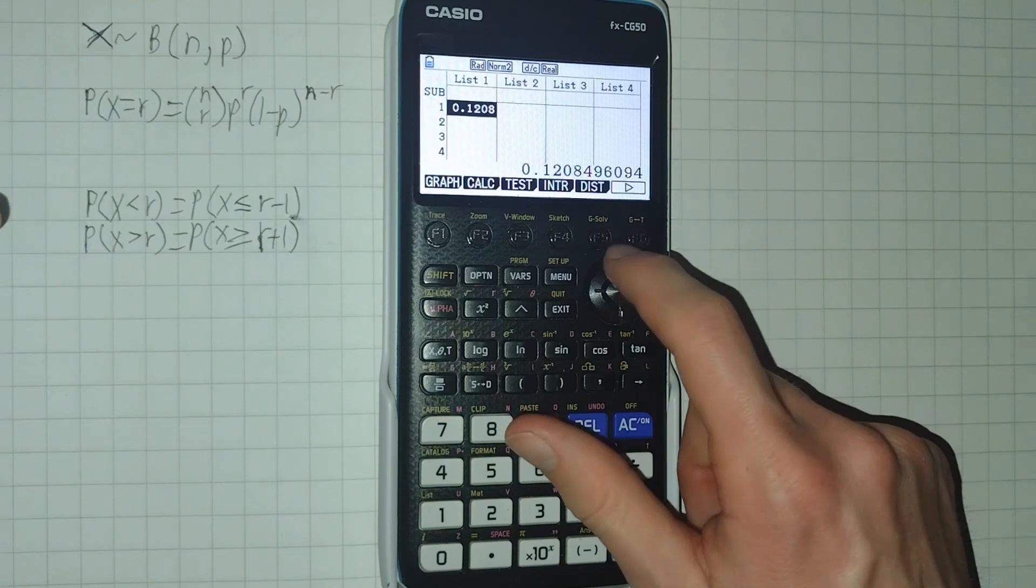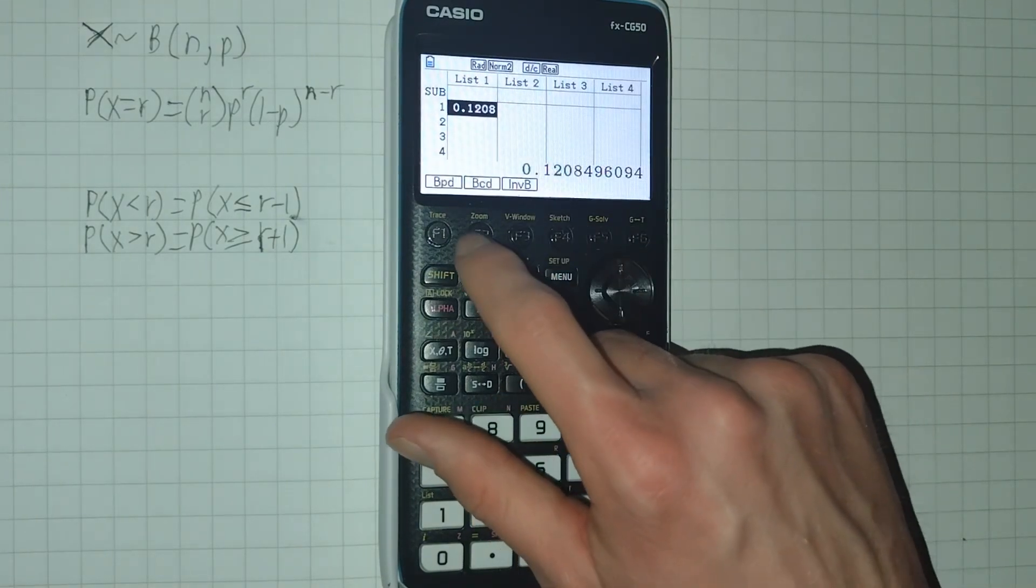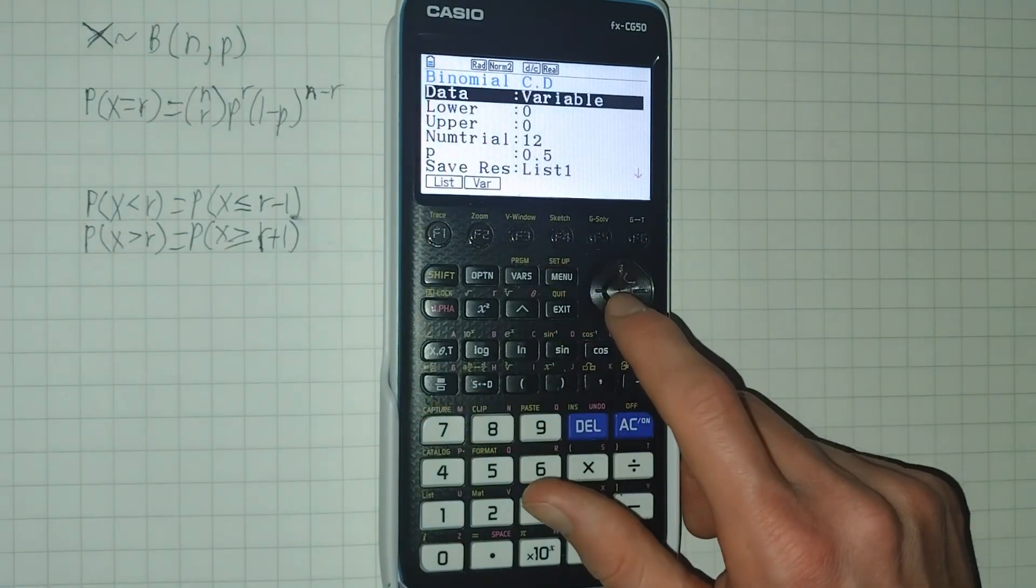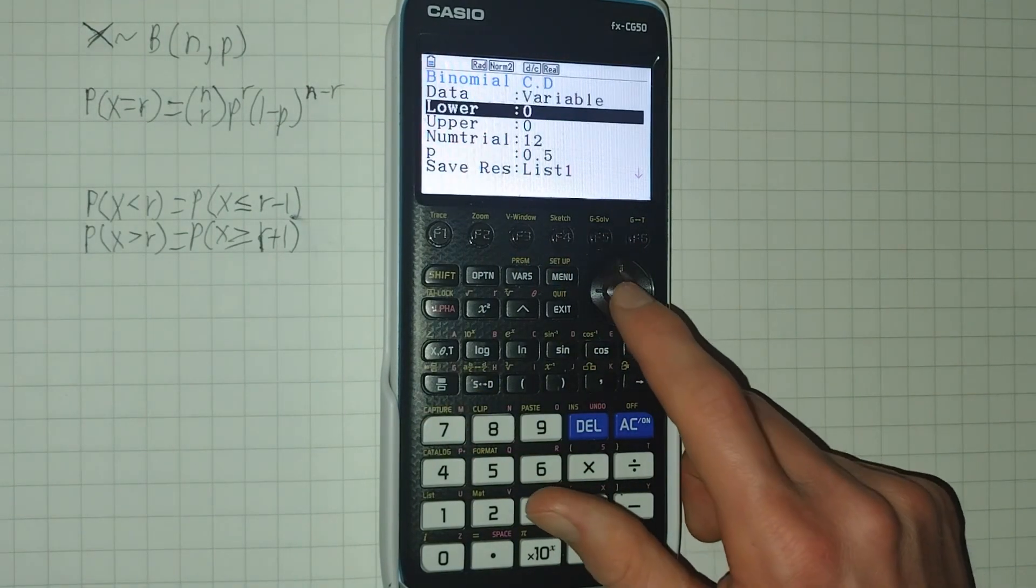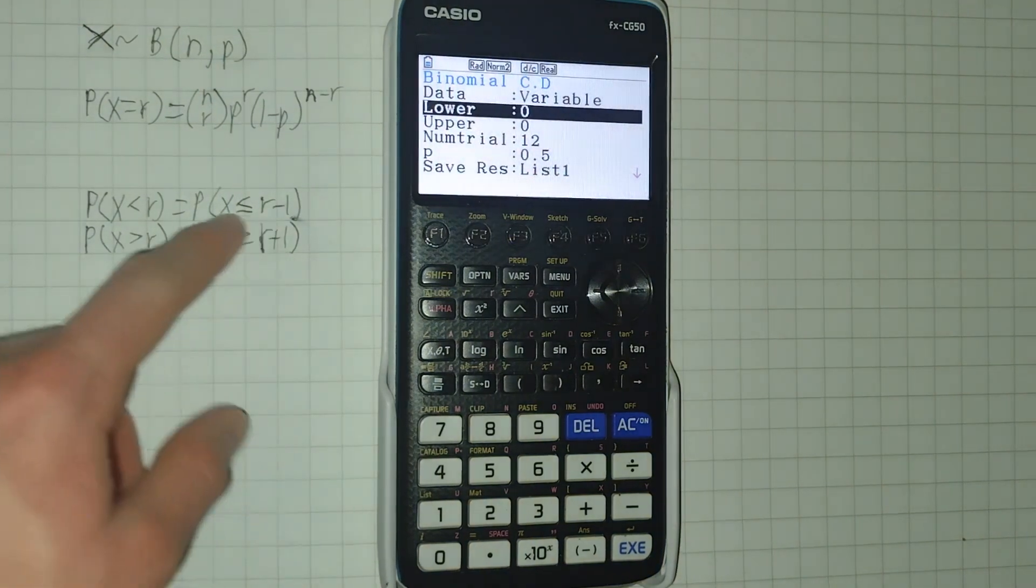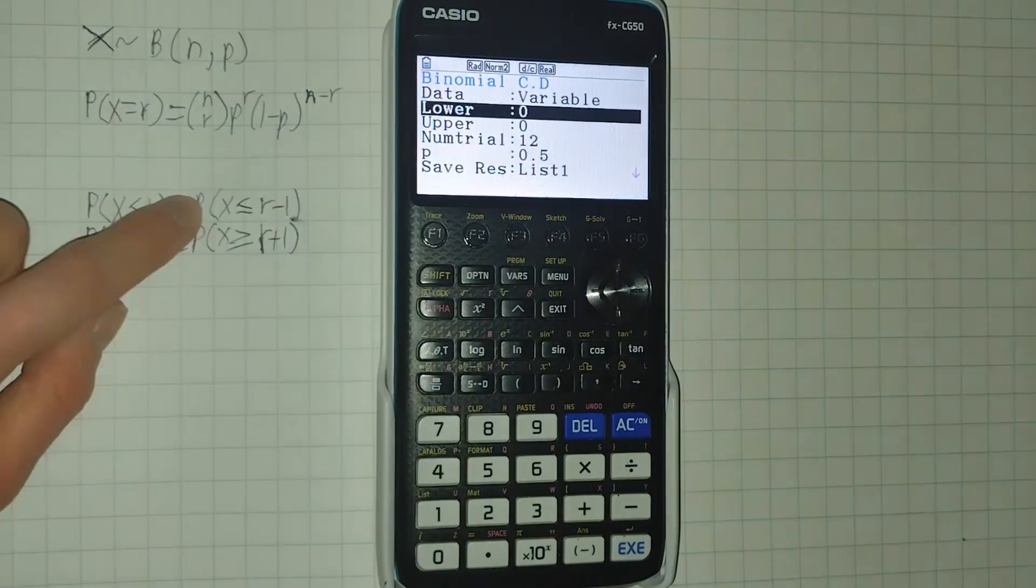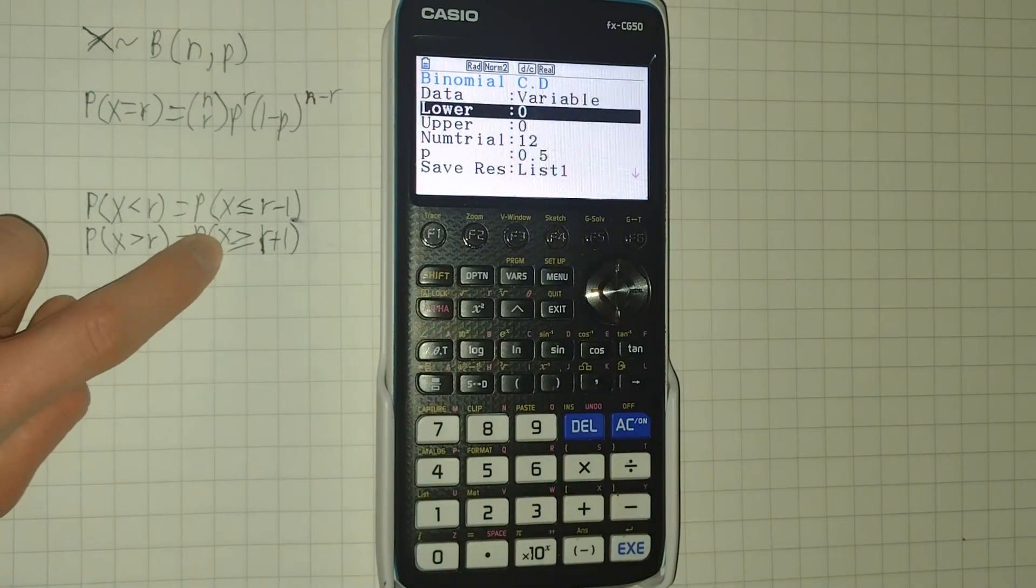So again, we can use our calculator. We're going to hit F5, F5, and this time we'll hit F2 for BCD. Now, for lower, we will place in our lower bound. This only works if it's in this form, less than or equal to. So if you've got it as just less than or greater than, you need to put it as less than or equal to, or greater than or equal to.